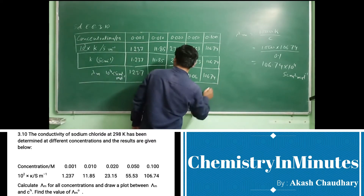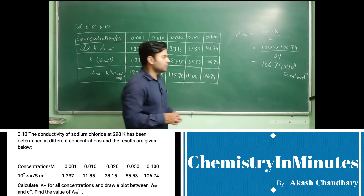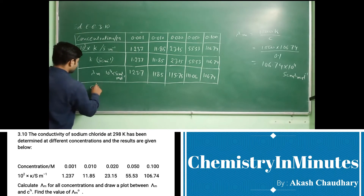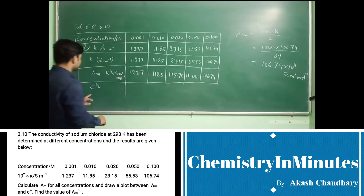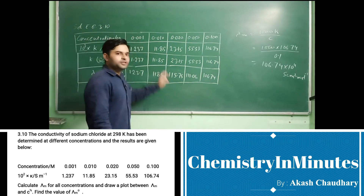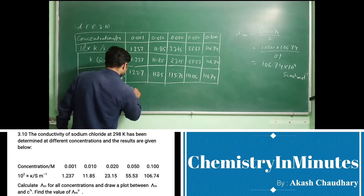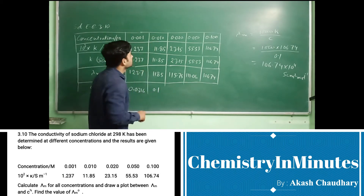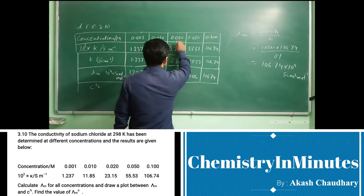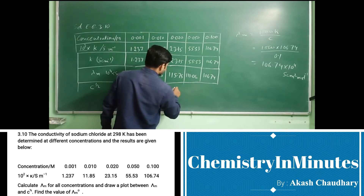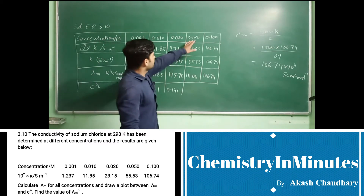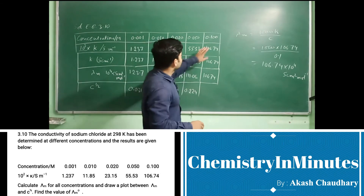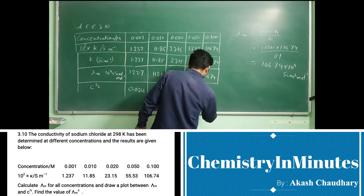Now to plot the graph we need the values of c raised to the power half. The square root of 0.001 is 0.0316. The square root of 0.01 is 0.1. The square root of 0.02 is 0.141. The square root of 0.05 is approximately 0.224. And the square root of 0.1 is 0.316.